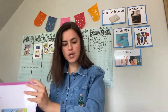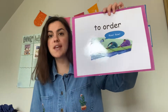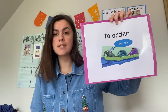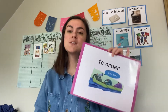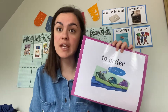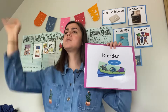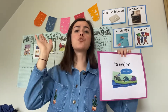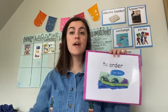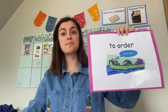The next word we're going to practice is a verb. That means it's an action. This word is 'order.' Can you say 'order'? Order is when you tell someone to do things. So you can order somebody to make your bed or bring you ice cream. So if I order a pizza, I'm telling somebody to bring me a pizza. That's 'order.'